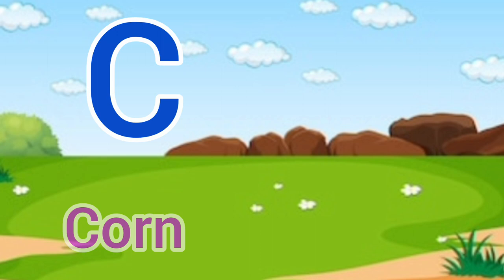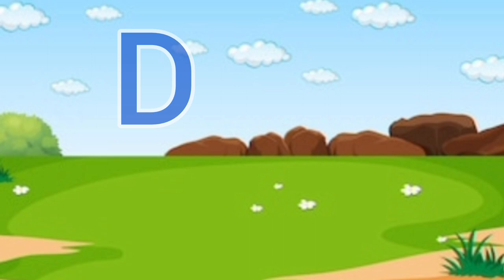C for corn, corn means makka. D for donkey, donkey means gada.